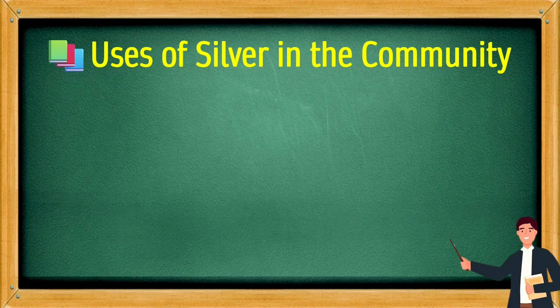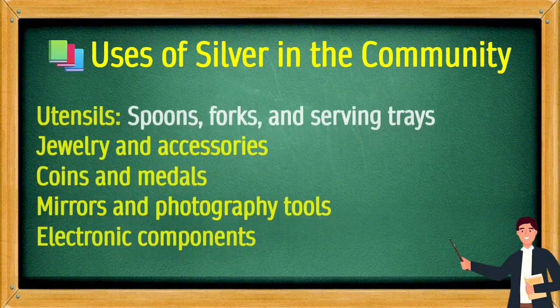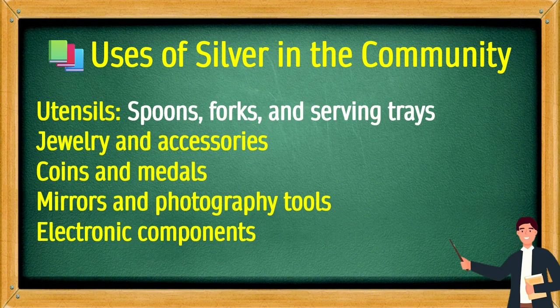Uses of silver in the community: Utensils — spoons, forks, and serving trays. As jewelry and accessories. Coins and medals. Mirrors and photography tools. Electronic components.